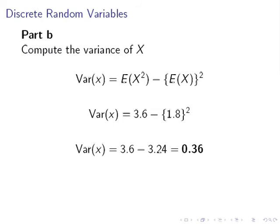So k equals 1, the missing value is 1, and the variance is 0.36. That ends our presentation.